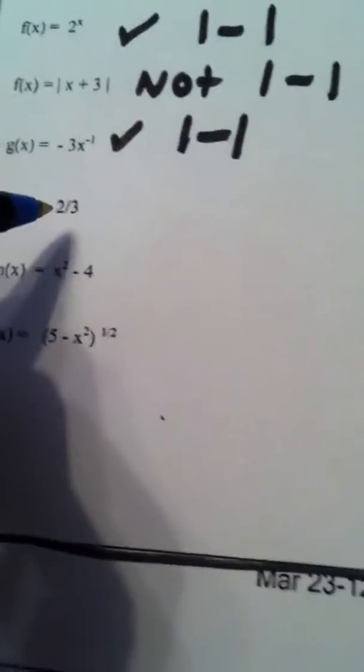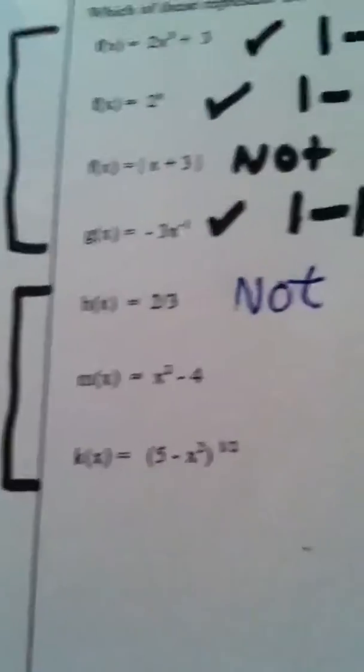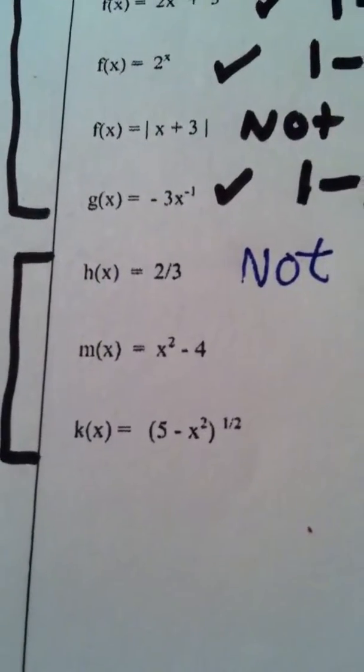So a constant function is not one-to-one. Okay, how about the next one? m of x equals x squared minus 4.